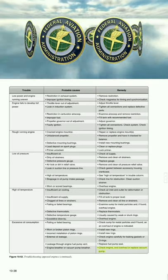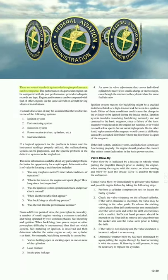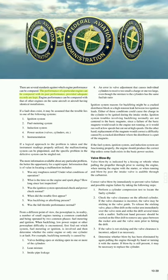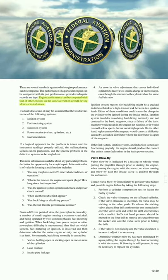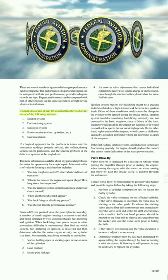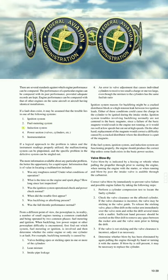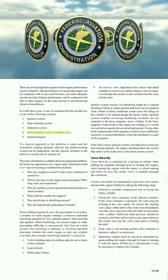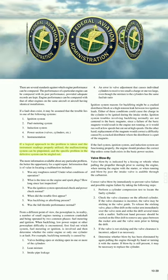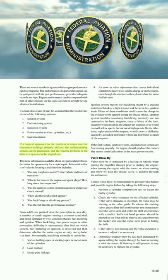There are several standards against which engine performance can be compared: the performance of a particular engine can be compared with its past performance (provided adequate records are kept), or with other engines on the same aircraft having identical installations. If a fault exists, the trouble likely lies in one of the following systems: (1) ignition system, (2) fuel metering system, (3) induction system, (4) power section — valves and cylinders, or (5) instrumentation.